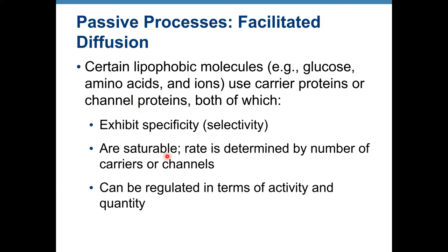Carrier and channel proteins are also saturable. Saturable means: if you have 100 channel proteins and all of them are working, we cannot increase the rate of diffusion anymore. So saturable means the rate is determined by the number of carrier or channel proteins. If all of them are working, that's the maximum speed of diffusion. Another characteristic is that they can be regulated in terms of activity and quantity. So carrier and channel proteins are specific, saturable, and can be regulated.